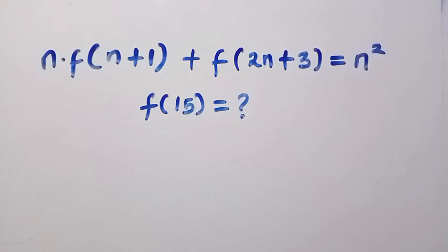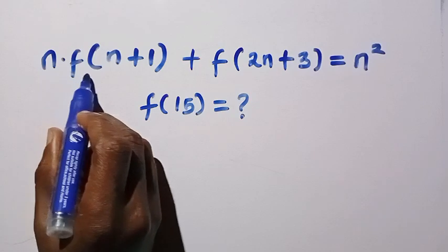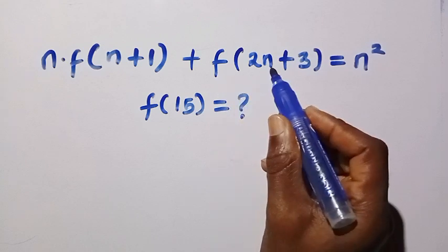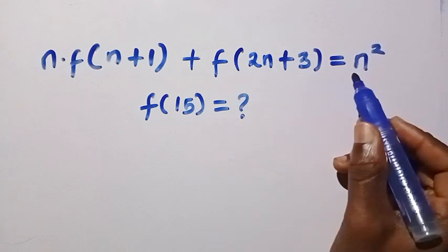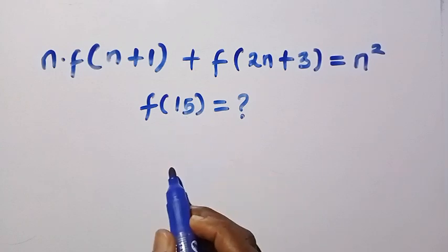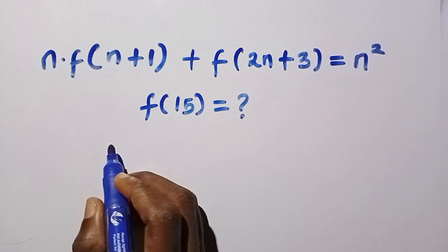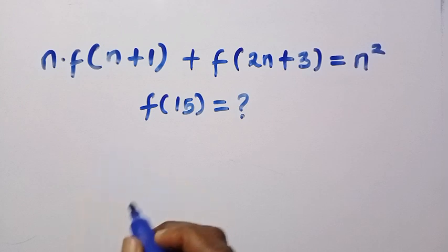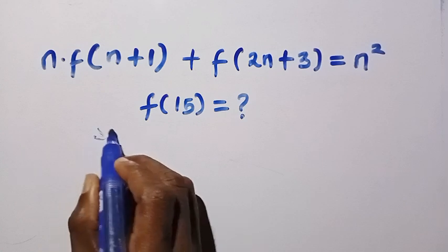Good day viewers, you are welcome. Here is how to solve these nice functional equations where we have n multiplied by f of n plus 1, plus f of 2n plus 3, equals n squared. What is f of 15? In this video I'm going to be applying two different methods, and if you have another method of solving this, you can drop it in the comment box so that we learn together. Let's start with the solution.